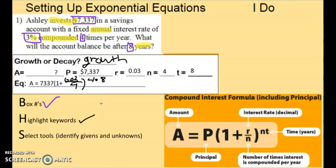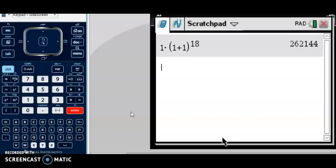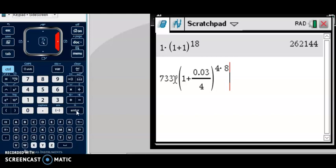So now we're going to go to our calculator and type this in to evaluate for A. So let's type that in, $7,337, parenthesis, 1 plus, control divide to get the fraction, 0.03, then press down, 4 for N, press right twice to get out of the parenthesis, caret, 4 times 8, press right, and then enter.